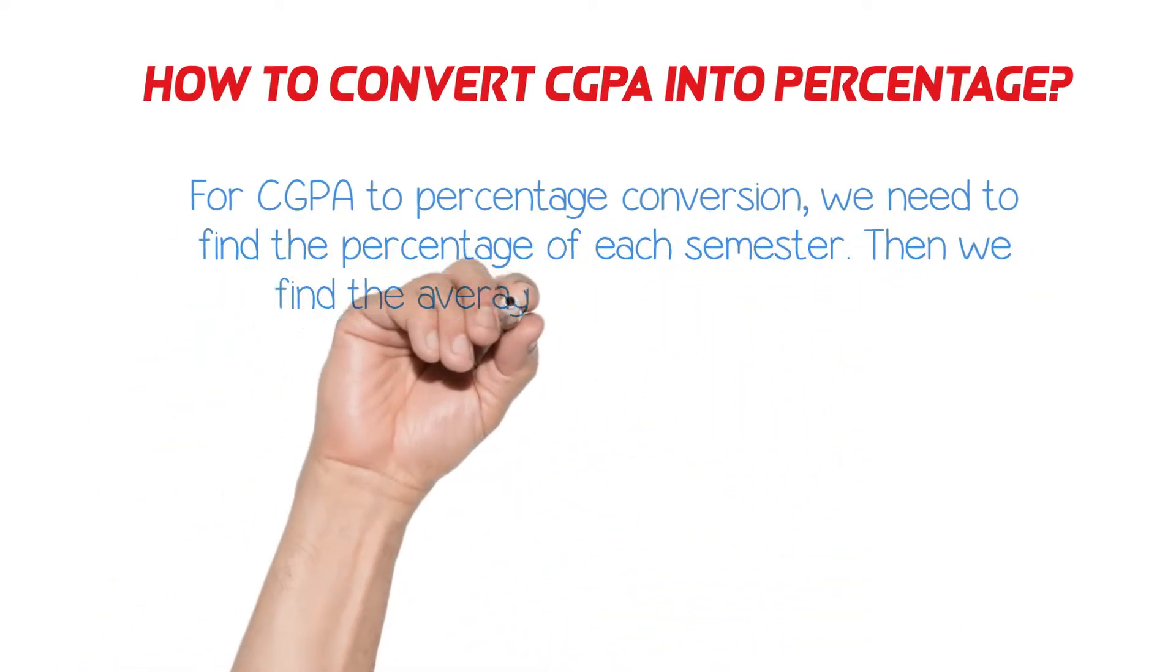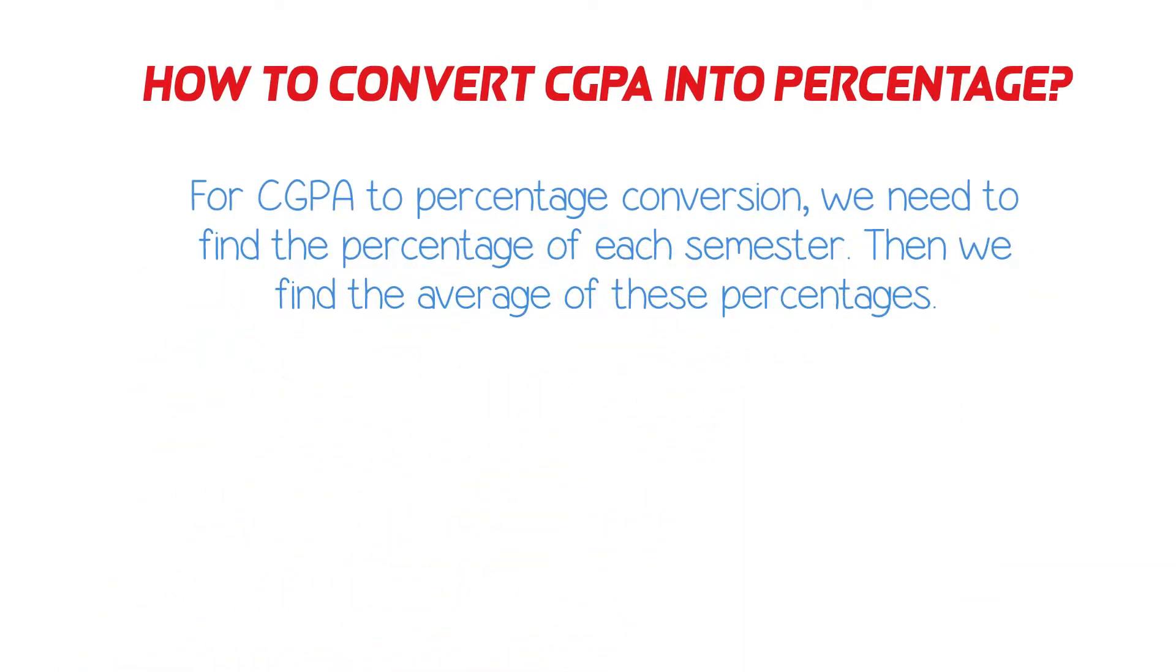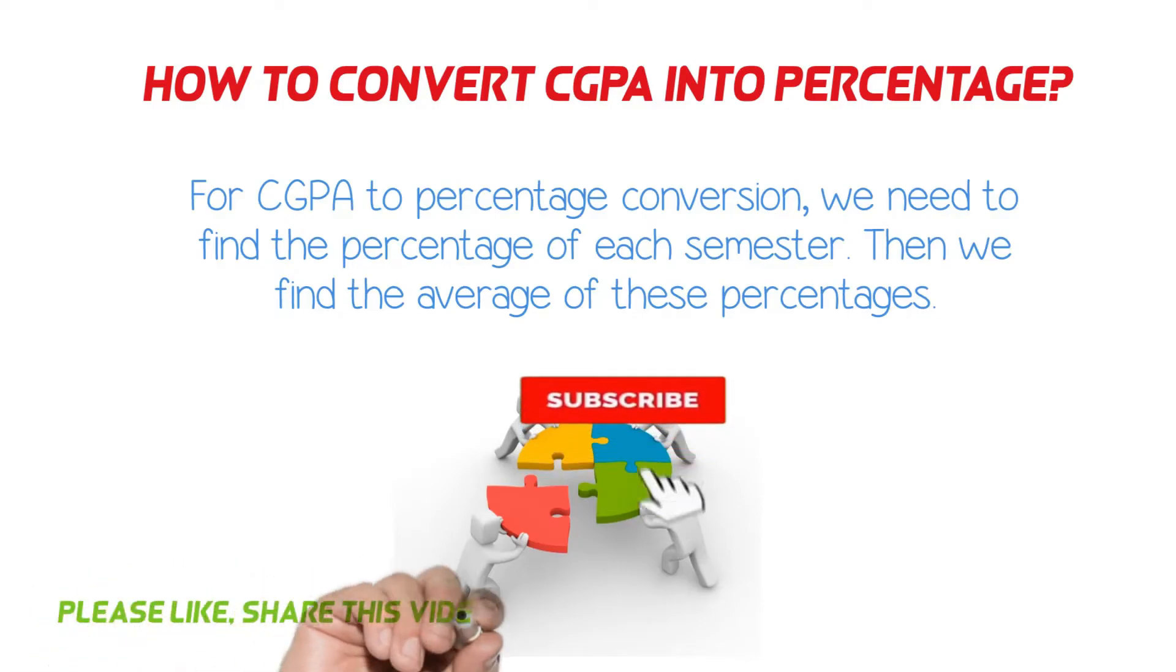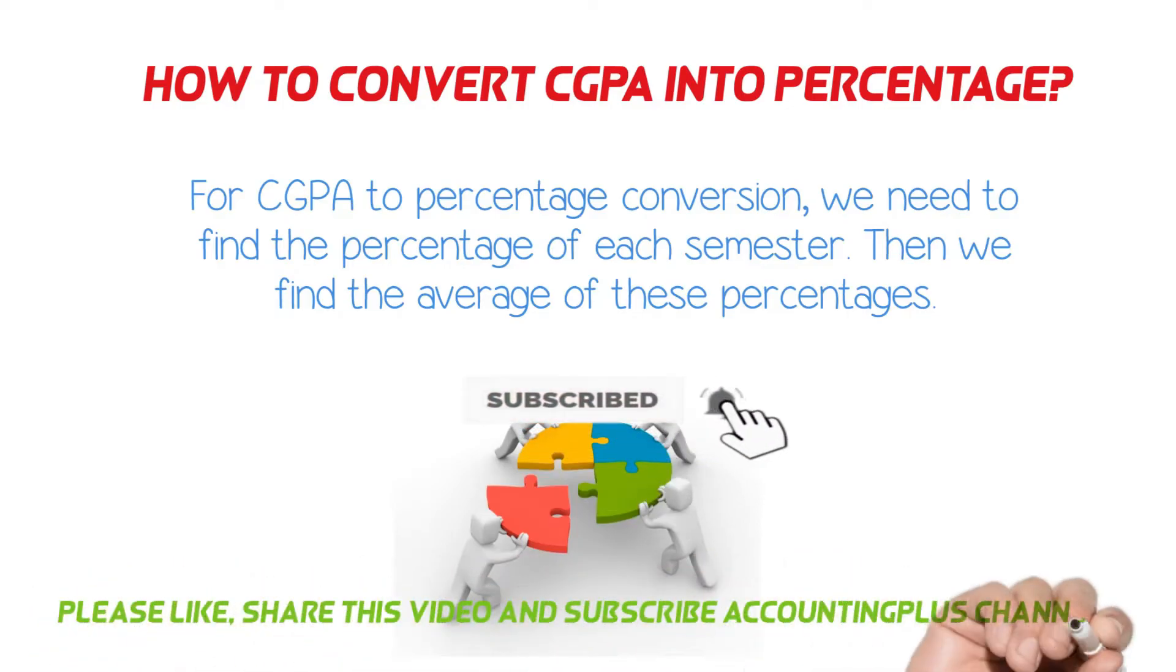It is so simple, just take a look. For CGPA to percentage conversion, we need to find the percentage of each semester. Then we find the average of these percentages. Let me explain with the help of an example.